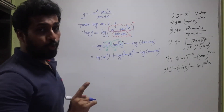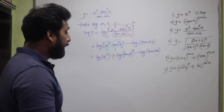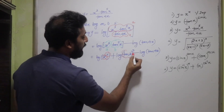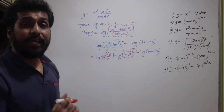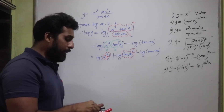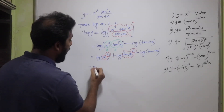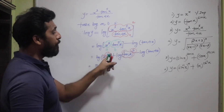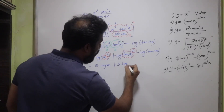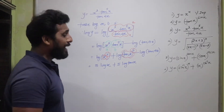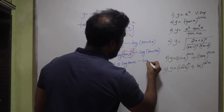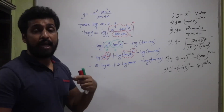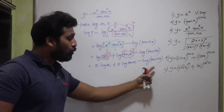Applying the power rule — log(aᵐ) = m·log a — to each term: log y = 3·log x + 5·log(tan x) − log(tan 4x). This is the simplified form of log y. Now differentiating this is far easier than differentiating the original expression directly.